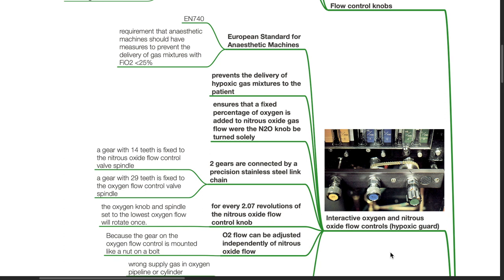Interactive oxygen and nitrous oxide flow controls, also known as the hypoxic guard. It is a European standard for anesthetic machines, EN740, requirement that anesthetic machines should have measures to prevent the delivery of gas mixtures with FiO2 of less than 25%. This hypoxic guard prevents the delivery of hypoxic gas mixtures to the patient.